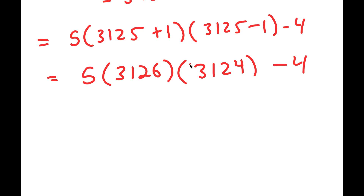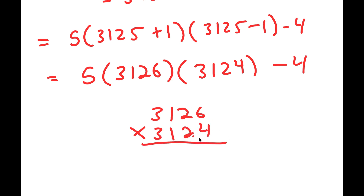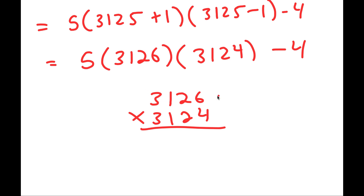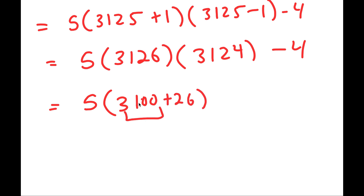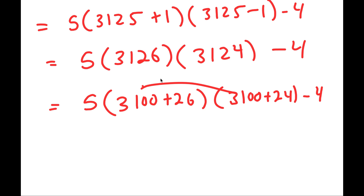The main challenge now is multiplying 3,126 by 3,124. We could do it the normal way, but that would take very long and could result in many errors. So instead, I'm going to use a simpler and more efficient method. I'll rewrite 3,126 as 3,100 plus 26, and 3,124 as 3,100 plus 24. This way, we have simpler numbers because the larger ones end in zero.